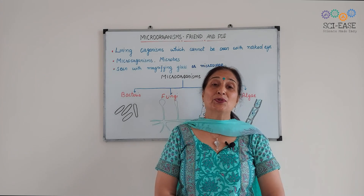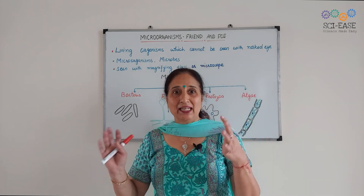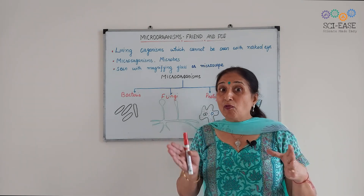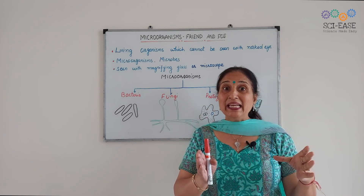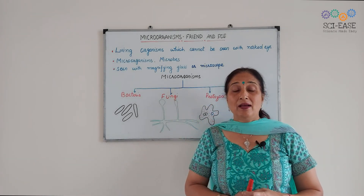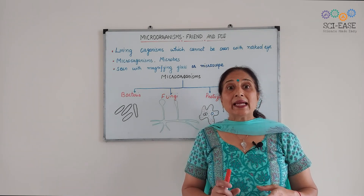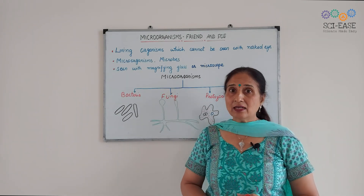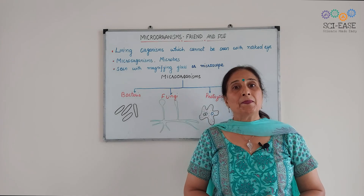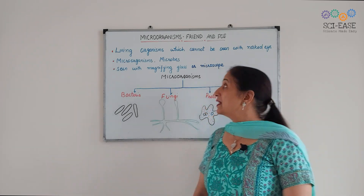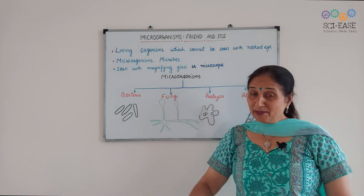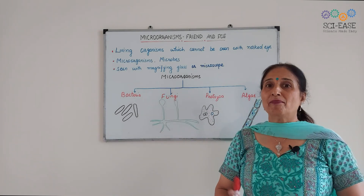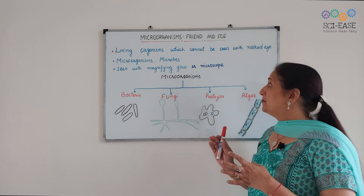First, we should know what micro-organisms means. You know what organisms are, but what are micro-organisms? Micro means very small. They are so small that they can be seen only with the help of either a magnifying glass or a microscope. So, micro-organisms are very small and they can be seen only with the help of a magnifying glass or microscope.